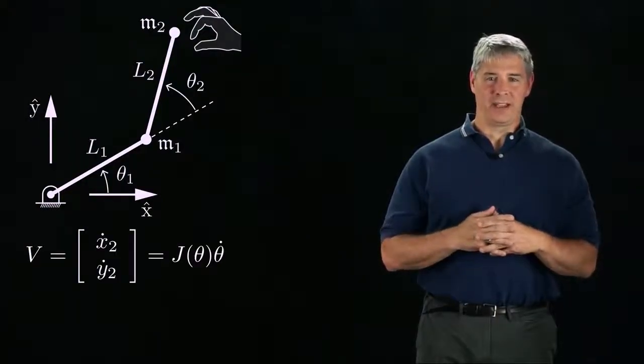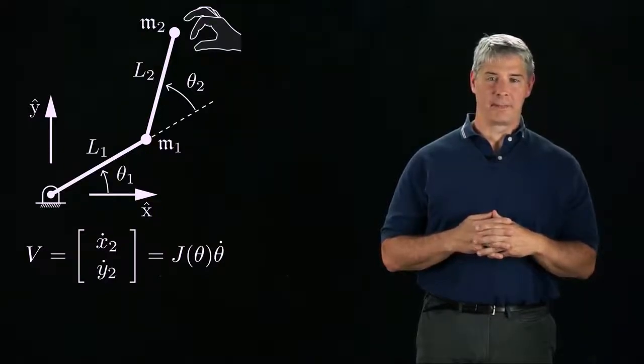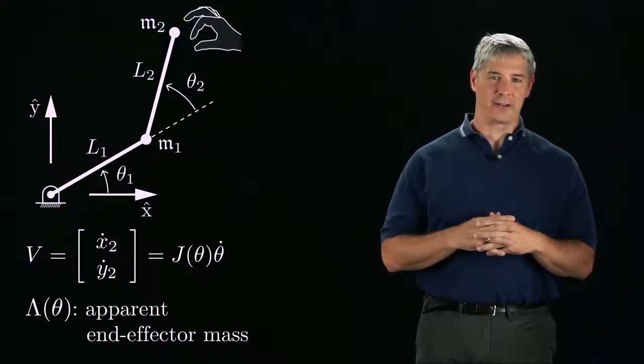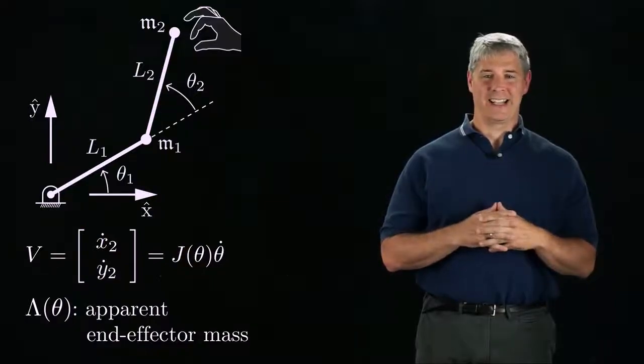Let's say that v is the endpoint linear velocity related to the joint velocity by the Jacobian, j. When you linearly accelerate the endpoint, you will feel an apparent mass at the end effector that depends on the joint configuration. We call this apparent mass lambda of theta.